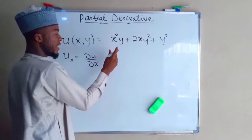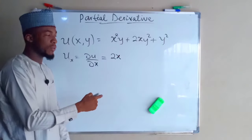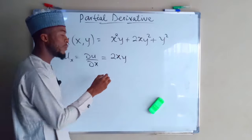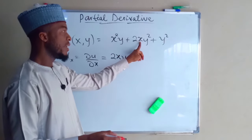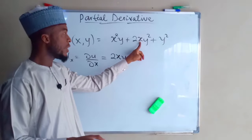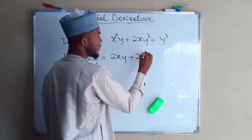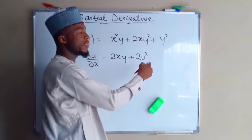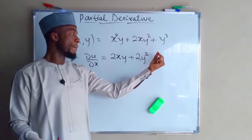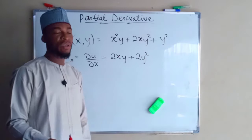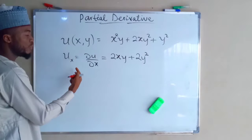So if you differentiate x here, you are going to obtain 2x. But remember, y is constant, so we have 2xy. Then for the second term, if you differentiate x — which has an index of 1 — it will vanish, leaving only 2y squared. And the last term does not contain any x, so you treat it as constant. The derivative of a constant is 0. So this is the derivative of u with respect to x.